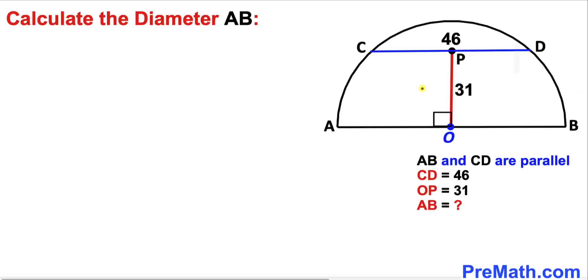Welcome to PreMath. In this video, we have a semicircle as shown in this diagram, where chord CD is parallel to diameter AB. Moreover, this chord CD is 46 units.